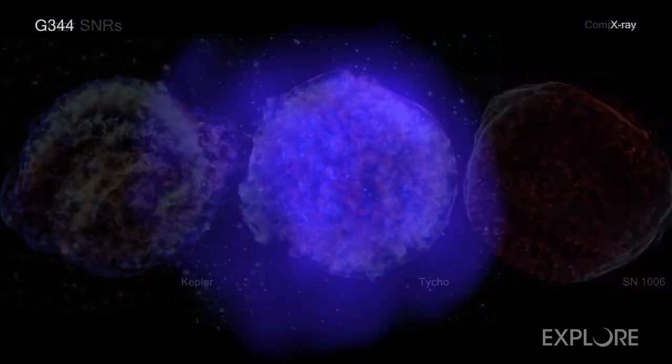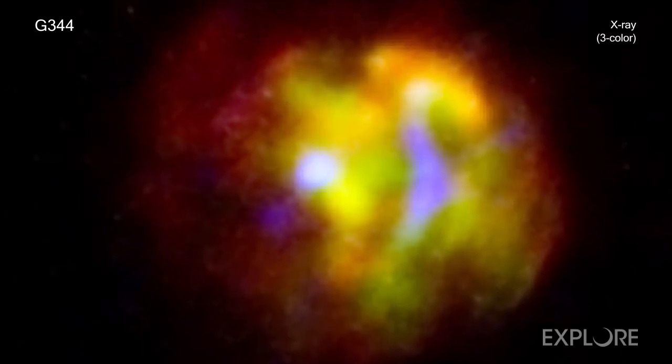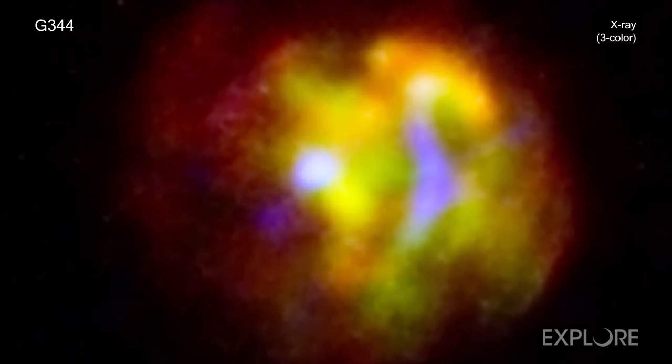By looking deeply at G344.7-0.1 with Chandra, astronomers have a window into an important phase later in the evolution of a Type Ia supernova remnant.